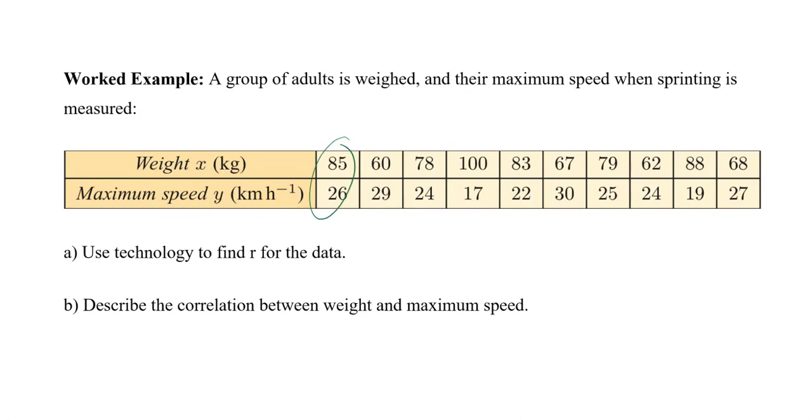So, for example, this person is 85 kilograms and runs at a maximum speed of 26 kilometers per hour. So, first thing we're going to do is we're going to input this into our calculator.